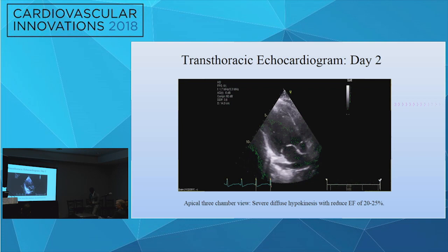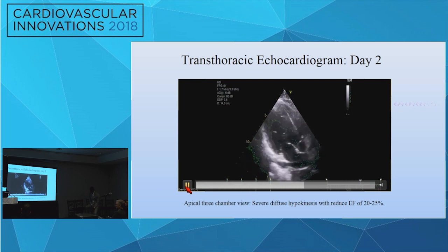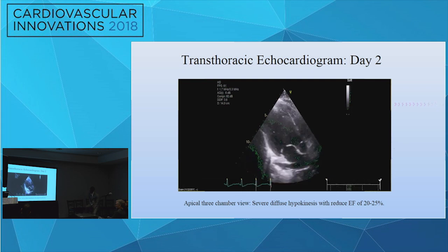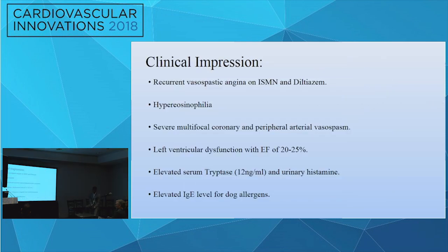The echo on day two shows severe diffuse hypokinesis with a reduced EF of 20 to 25 percent. The clinical impression: the patient is presenting with recurrent vasospastic angina despite being on ISMN and diltiazem, had hypereosinophilia with high absolute eosinophilic count, had severe multifocal coronary and peripheral arterial vasospasm, left ventricular dysfunction with an EF of 20 to 25 percent, elevated serum tryptase, urinary histamine, and elevated IgE levels for dog allergens.